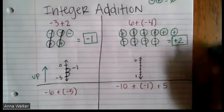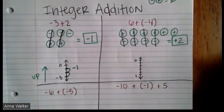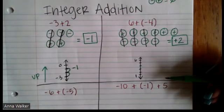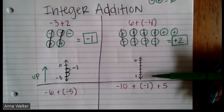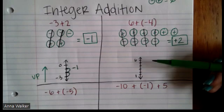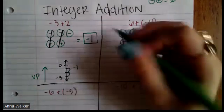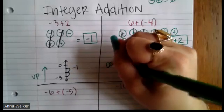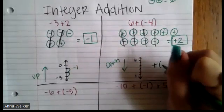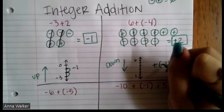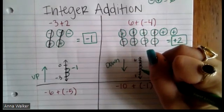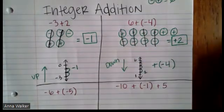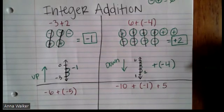We don't have to write the positive sign — if a number doesn't have a symbol, we assume it's positive. If we model that on the number line: when we add a negative, instead of going up the number line, that negative means we go down. When we add negative four, we go down the number line four spots: one, two, three, four — and we end up at positive two. So six plus negative four is positive two.